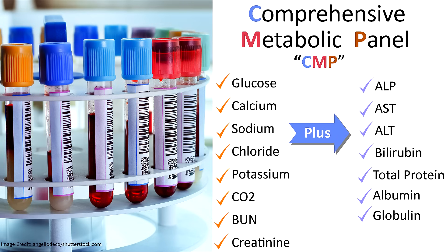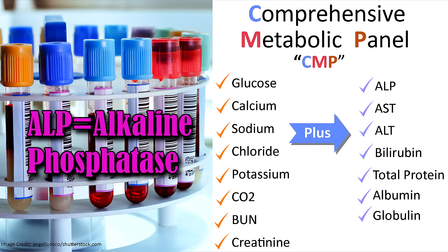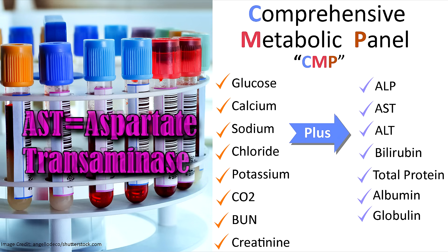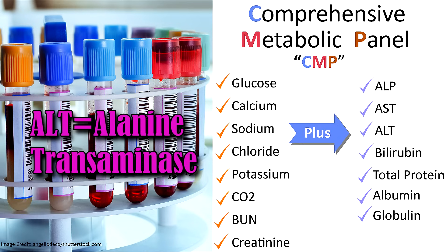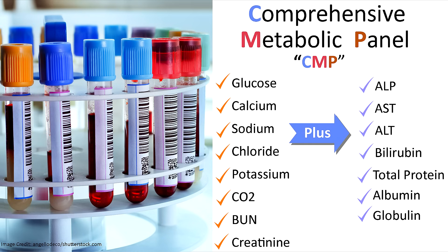The CMP, which stands for comprehensive metabolic panel, looks at those same electrolytes and renal function, plus it goes a step further and looks at liver function — which includes ALP (alkaline phosphatase), AST (aspartate transaminase), ALT (alanine transaminase), and then bilirubin, total protein, albumin, and globulin.